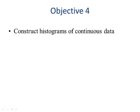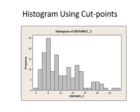Let's look at continuous data. This is the histogram for the variable in the student survey data for distance away from school. The variable name was distance_2, and we can see here that the number of classes was automatically determined from Minitab and it's using midpoints.